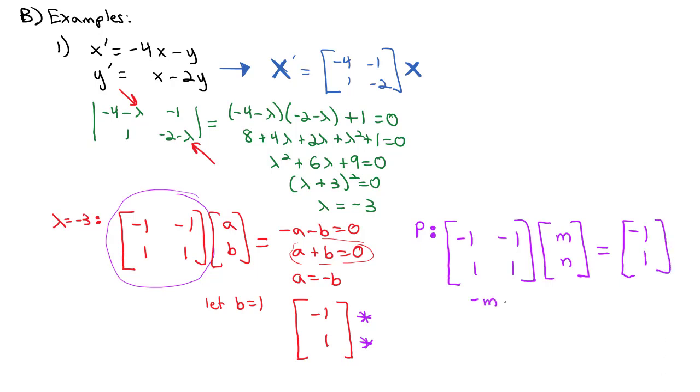When I do that, we get negative m minus n equals negative 1 and m plus n equals 1. Just like before when we made our vector by picking a value, I'm going to pick the second equation, so n equals 1 minus m. I can pick any value for n, so I'm going to let n equal 0. That gives me my p vector where m is 1 minus 0, which is 1, and n is 0.